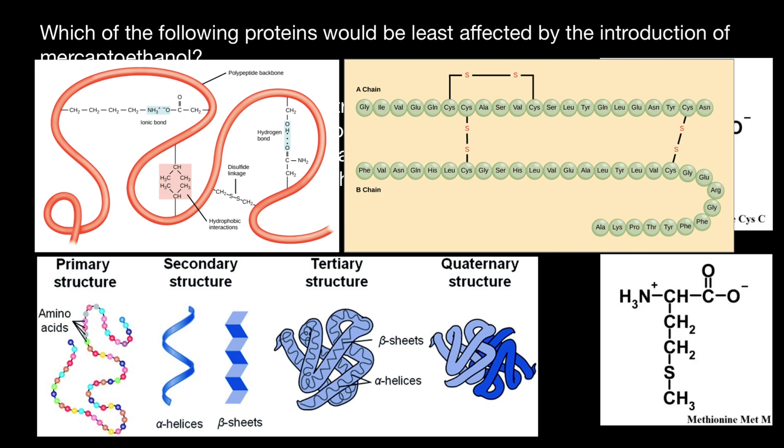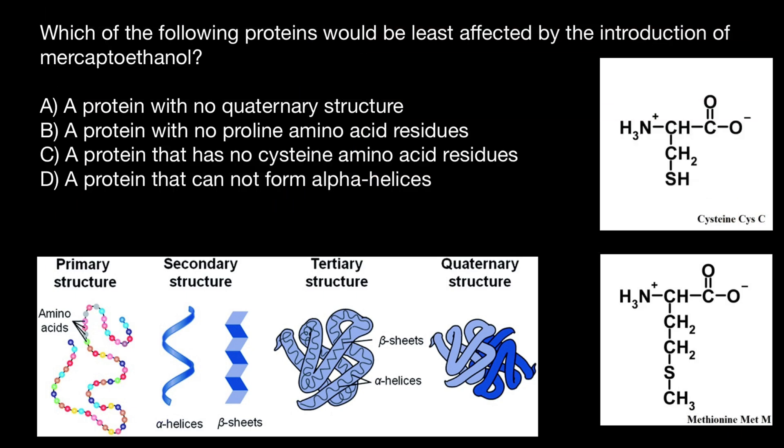I hope you recognize this protein. This is one of the simplest proteins, which is insulin. So now we can choose our answer. Let's check. And let's read our question again. Which of the following proteins would be least affected? So let me underline least affected by the introduction of mercaptoethanol. And this is going to be answer C, a protein that has no cysteine amino acid residues. If our protein is not going to have cysteine amino acid residues, that means that there are not going to be disulfide bridges formed. And our polypeptide chain, which doesn't have this amino acid, is not going to be affected by mercaptoethanol.